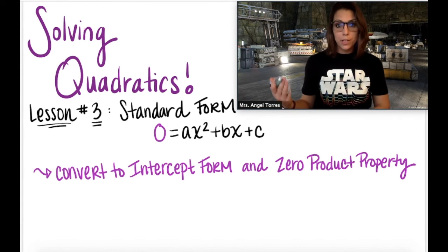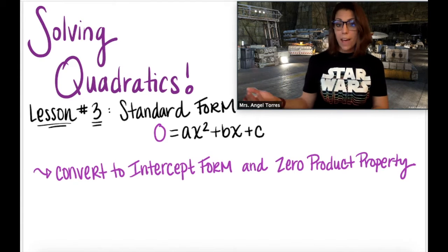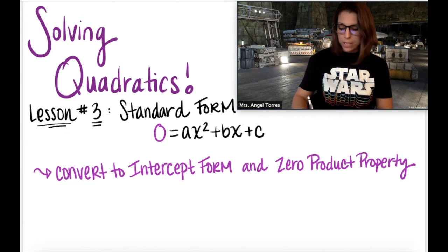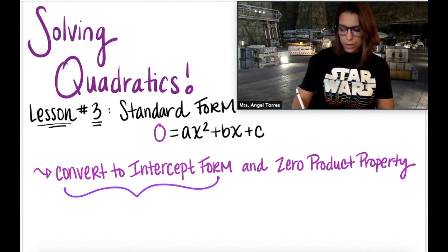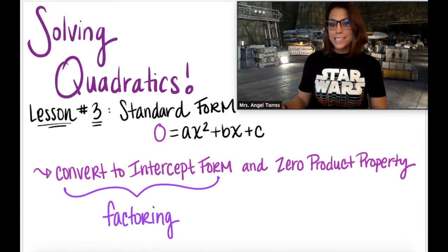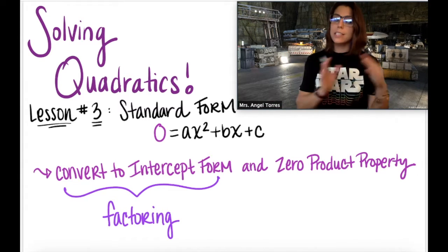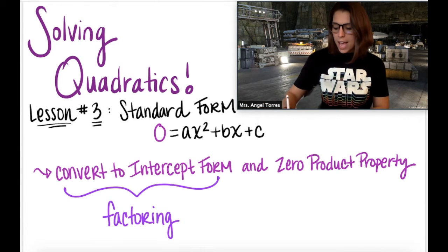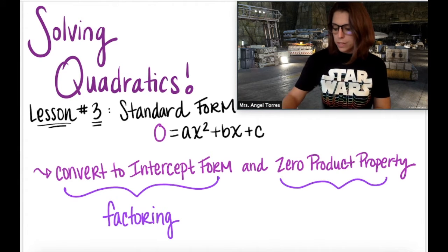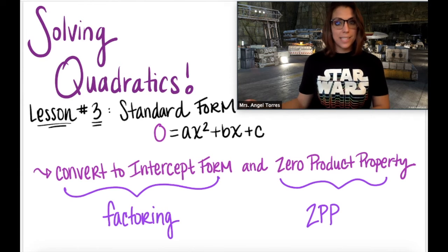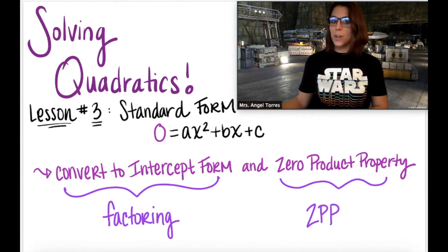So this method is very similar to solving in intercept form. In fact, the first step here is to convert it into intercept form, and we do that by factoring. Because factoring means to take something that's a sum or a difference and turn it into a product, in this case, a product of two binomials. And then we're going to apply our zero product property, like we just did in the previous lesson. So grab some notes, and let's get started.